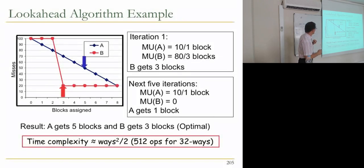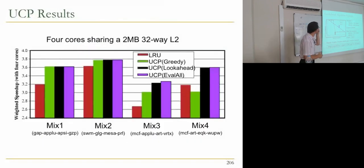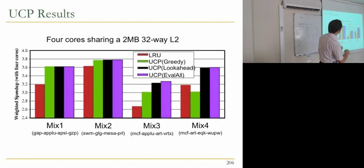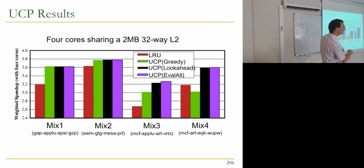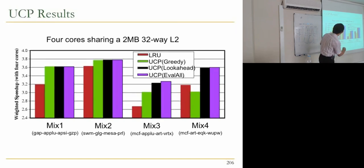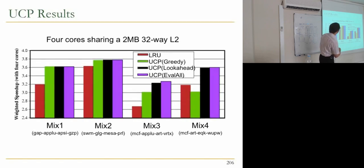The time complexity is approximately W²/2 where W is the number of ways. Looking at results for four cores: comparing the greedy algorithm, the look-ahead algorithm, and evaluating all potential solutions (the non-scalable approach). There are some mixes where the greedy algorithm performs worse than LRU because it produces a suboptimal or even bad cache partition, but in most cases the look-ahead algorithm performs similarly to evaluating all potential partitions while being much more scalable.